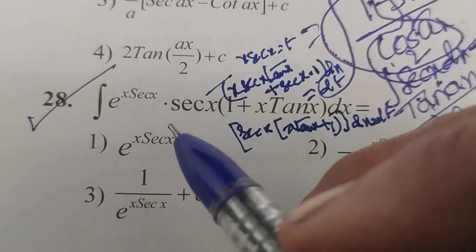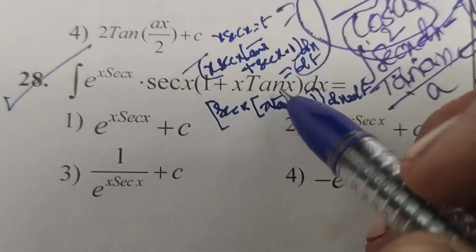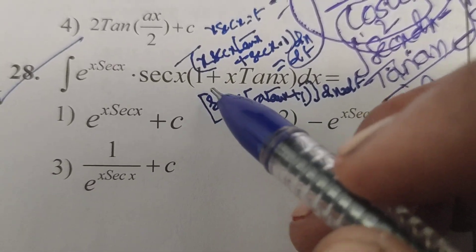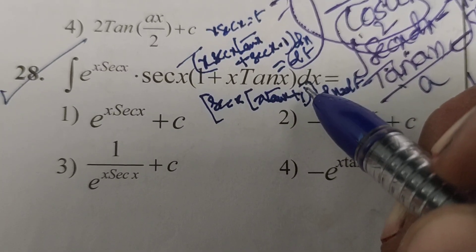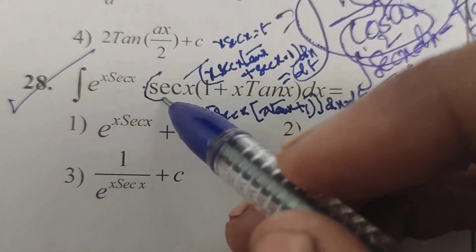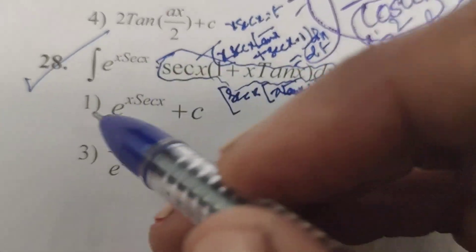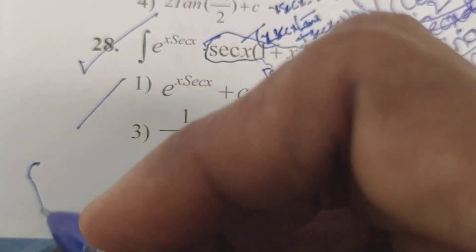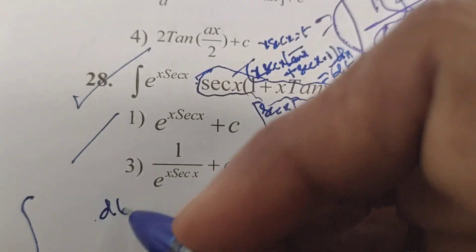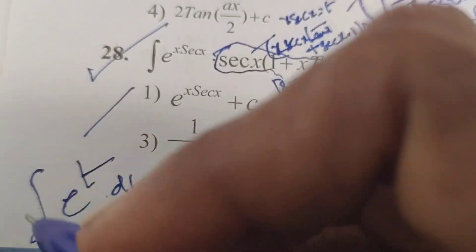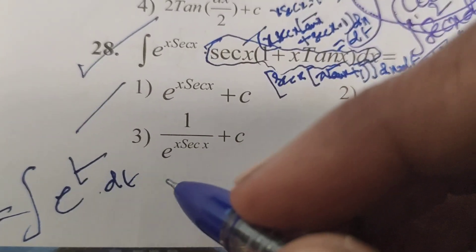Now here sec x into x tan x plus 1, or 1 plus x tan x dx, substitute here by the given problem dt. Now integral of e^x sec x, e^x sec x means t, integral of e^t dt.